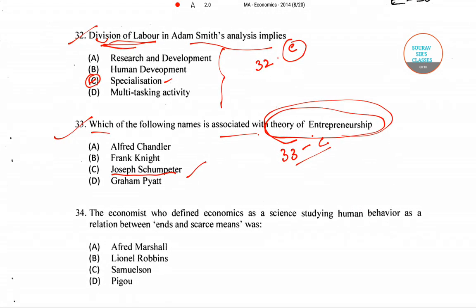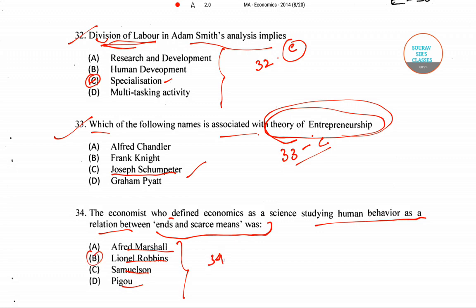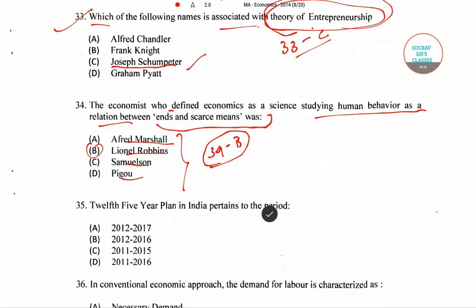Question number 34: the economist who defined economics as a science studying human behavior as a relationship between ends and scarce means. The options are Alfred Marshall, Lionel Robbins, Samuelson, and Pigou. The correct answer is option B — Lionel Robbins.